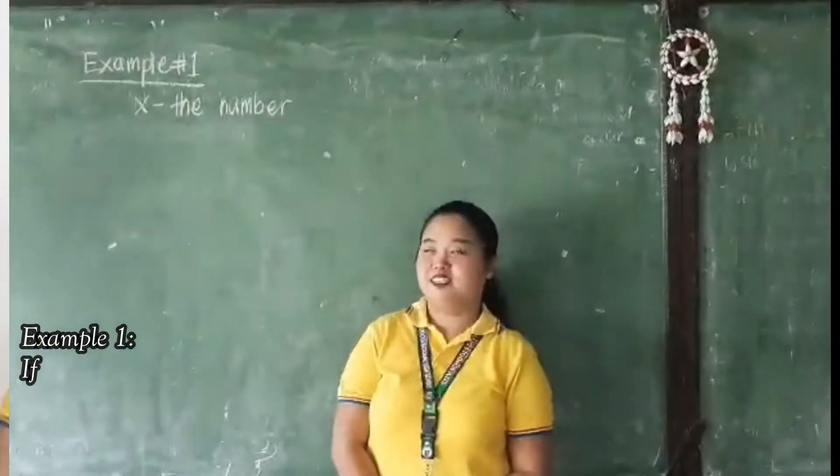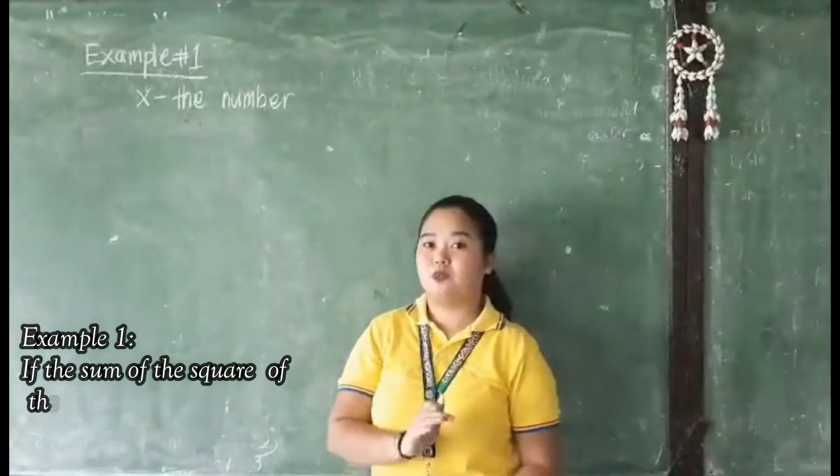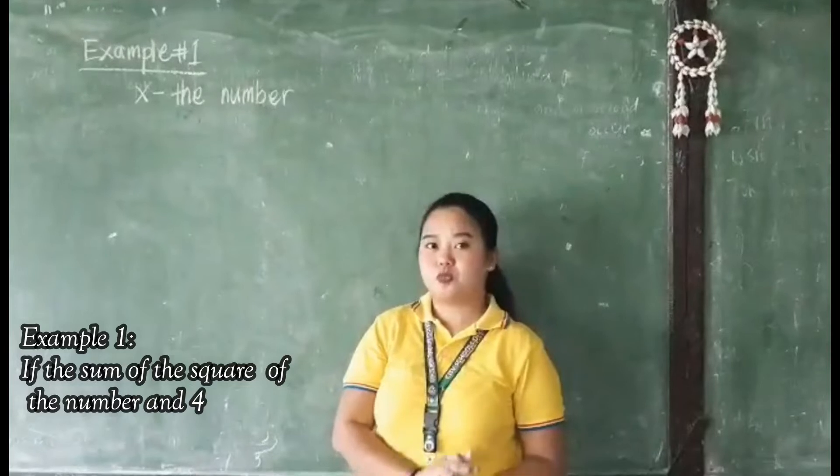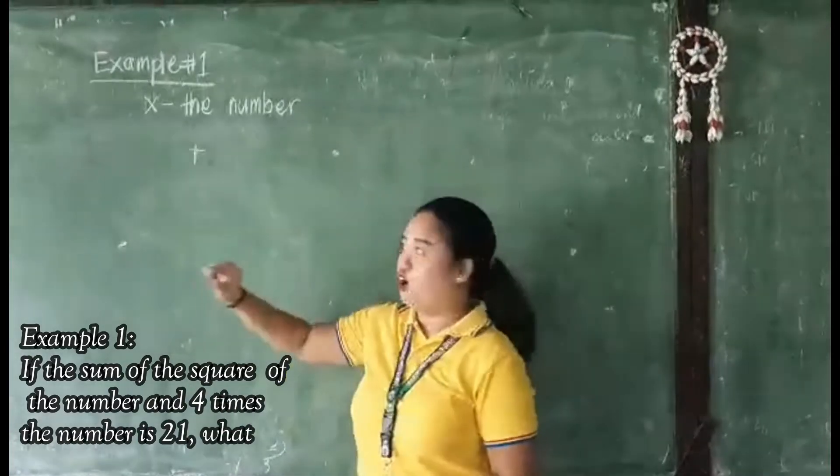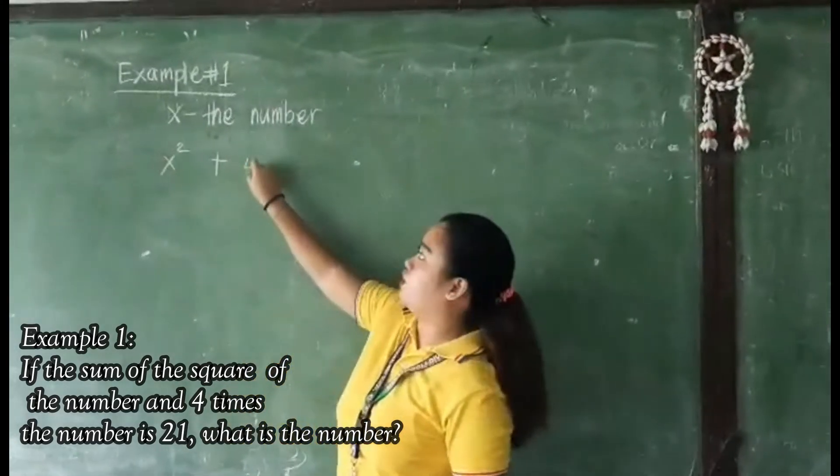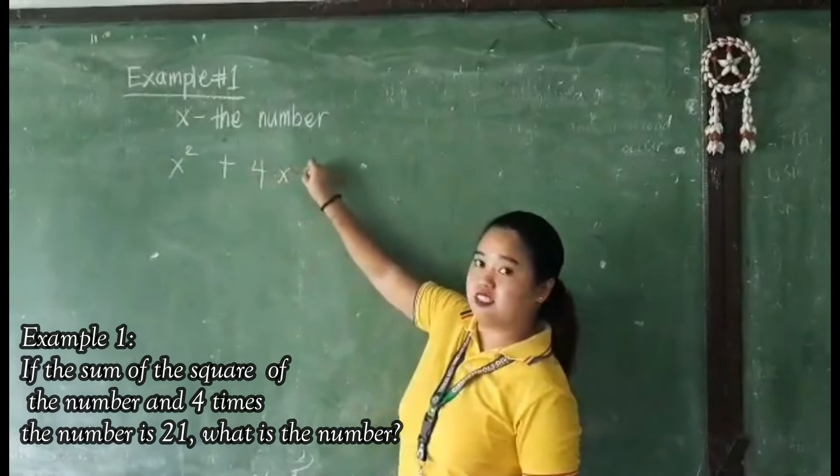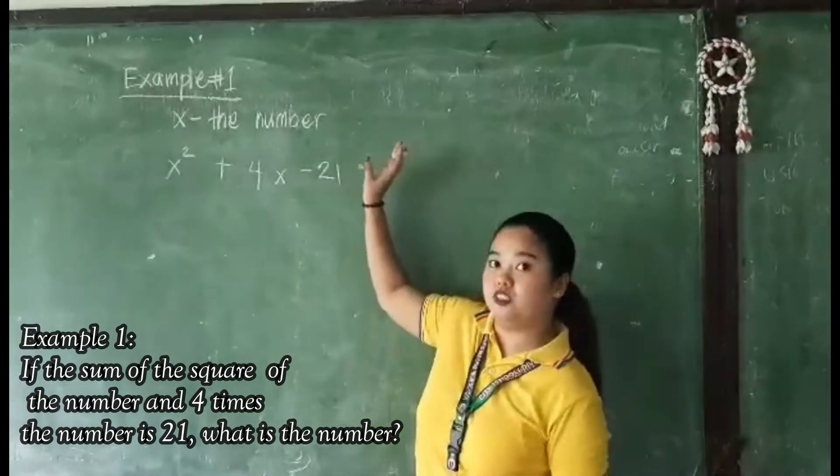In solving our example number 1, let x represent the number. So we need to translate our word phrase to mathematical phrase, wherein the sum of the square of a number and 4 times a number is equal to 21. So we need to equate this equation into 0.